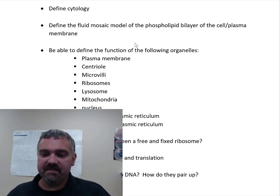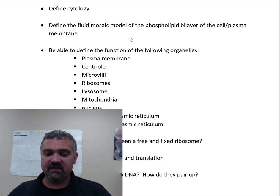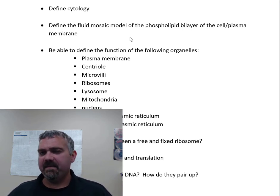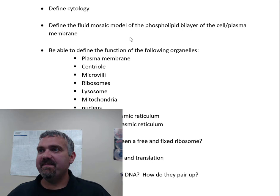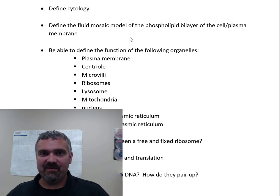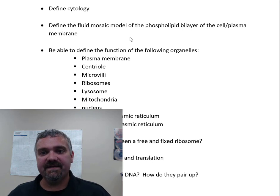Define the fluid mosaic model of the phospholipid bilayer of the cell or plasma membrane. Your cell membrane and your plasma membrane are the same thing. The ways we describe this cell membrane are as a fluid mosaic model and a phospholipid bilayer. When people ask what's the brain of the cell, people always say the nucleus. But I think of the nucleus more like a vault — its job is to house and protect DNA. When I think of the brain of a cell, I think of the cell membrane — it senses the world around it, processes information, and responds to it.